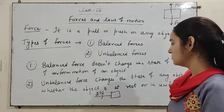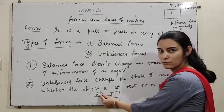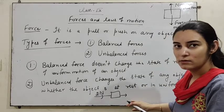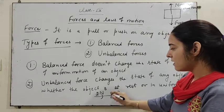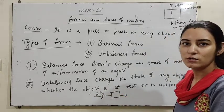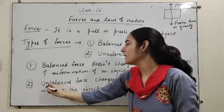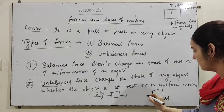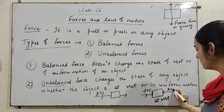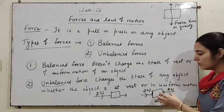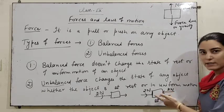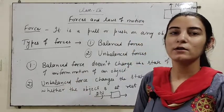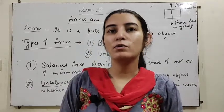For example, if only 2 Newton force is applied on a body, this is unbalanced force and the body starts moving — its state changes. Previously the body was at rest, but after applying 2 Newton force, it comes into motion. However, if 2 Newton is applied from both sides, net force is zero, so the body does not move — balanced force does not change the state of the object. Hope you understand force, its effects, and its types.